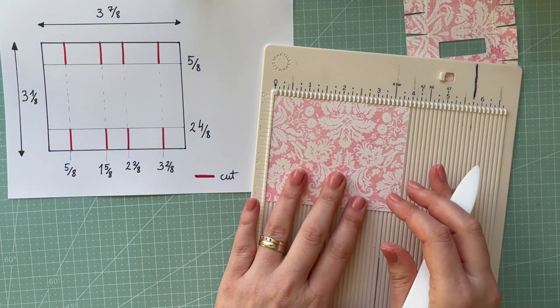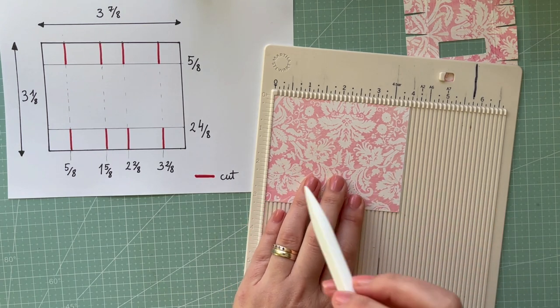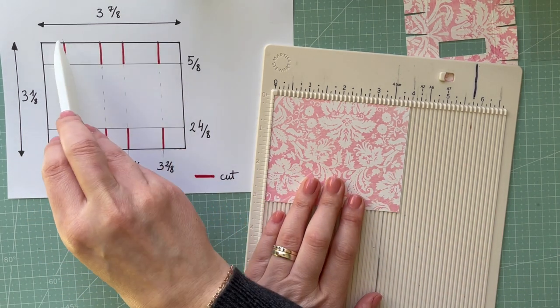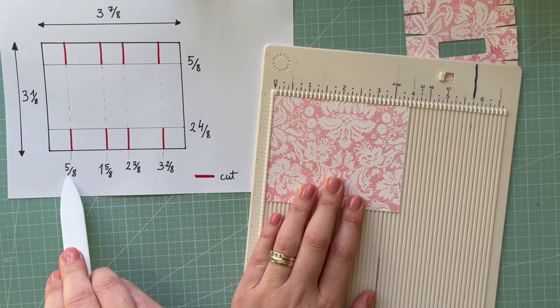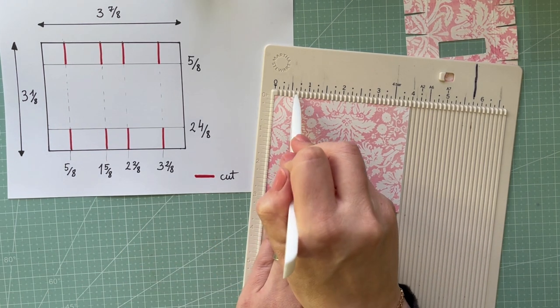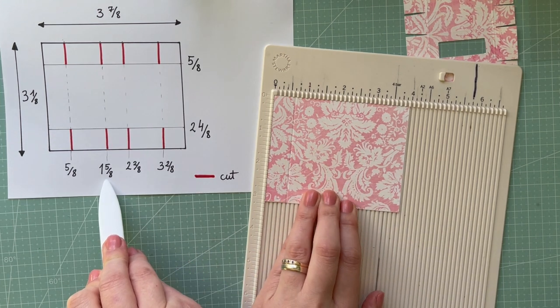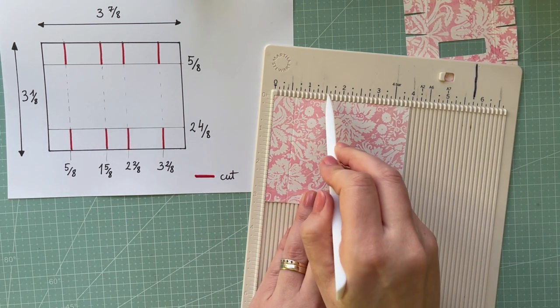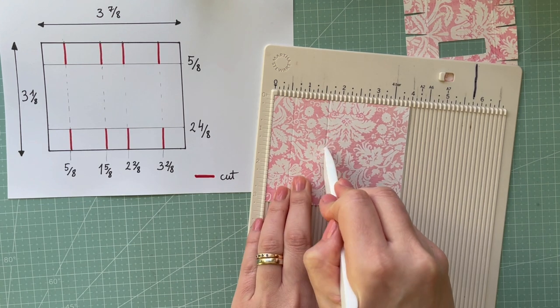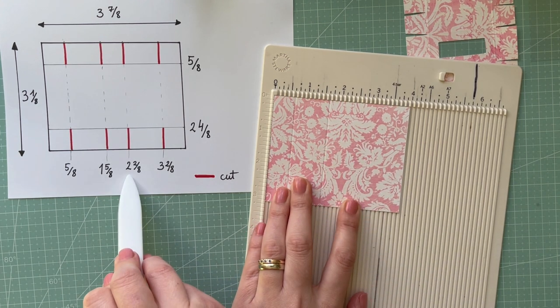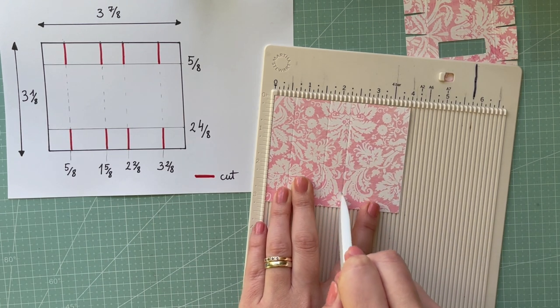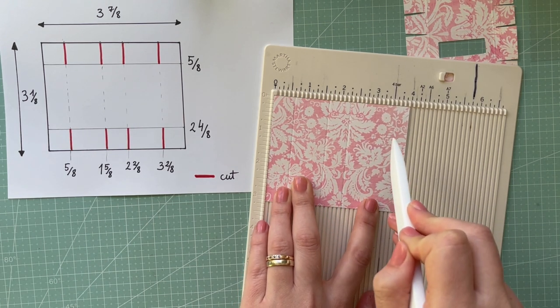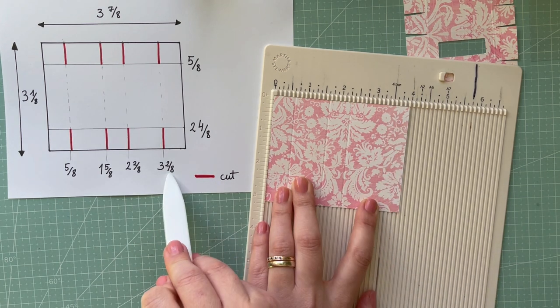We are scoring that long side first. We're scoring at 5/8, so that's the first score line. Then the second, 1 and 5/8, then 2, and 2 and 4/8 inches, and then 3 and 2/8.